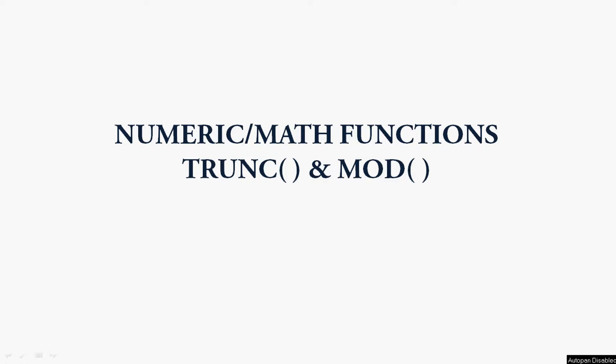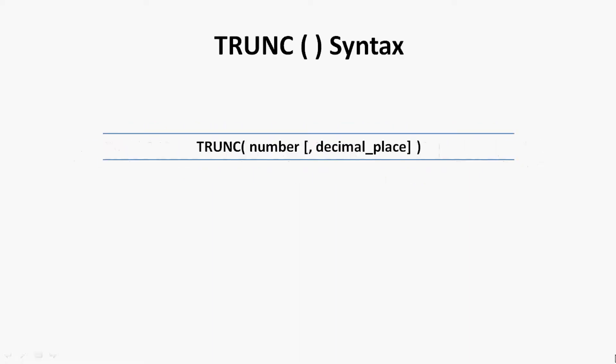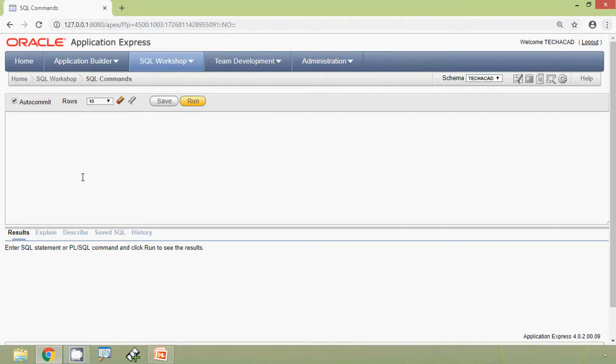Hi friends, welcome to Oracle tutorials. In this video we are going to see two functions: TRUNC and MOD. First we will see the function TRUNC. This function TRUNC returns a number truncated to a specific number of decimal places. Here we can see the syntax for the TRUNC function — TRUNC of number — and an optional parameter that is decimal place. We will see some examples using our Oracle Express application so that this function TRUNC will be more clear.